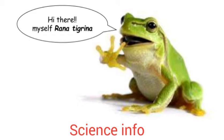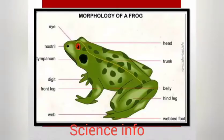First we talk about morphology. Morphology is the study of the external characteristics of living organisms. It contains eye, nostril, tympanum, digits, front leg, web feet, hind leg, belly, trunk, and head. This is the morphology of a frog.